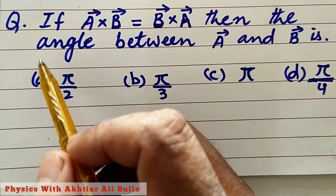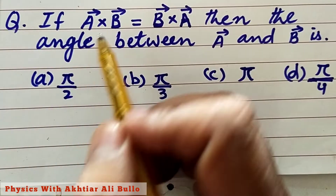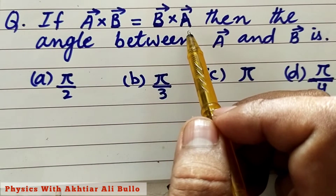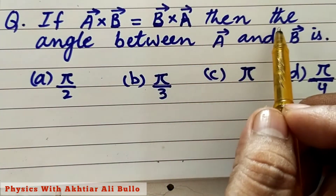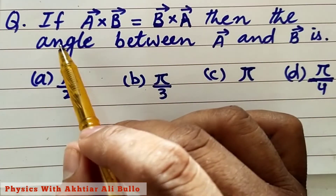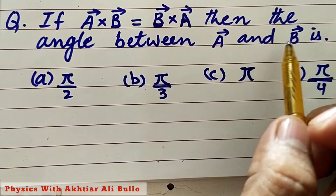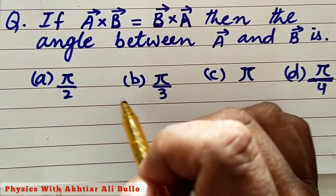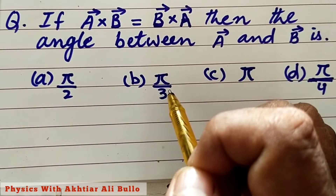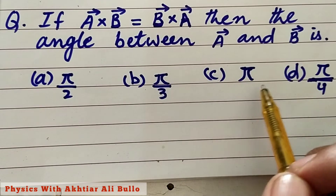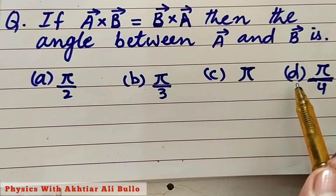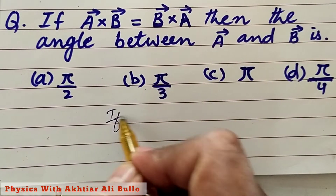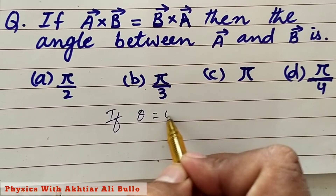The question is: if A cross B is equal to B cross A, then the angle between A and B is — A) pi/2, B) pi/3, C) pi, D) pi/4.